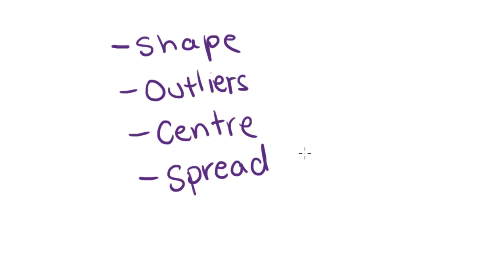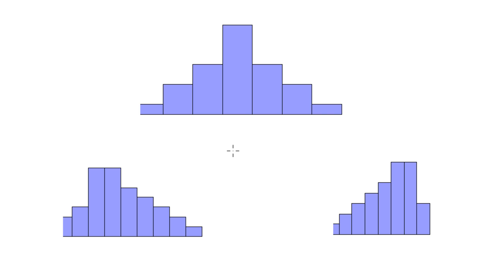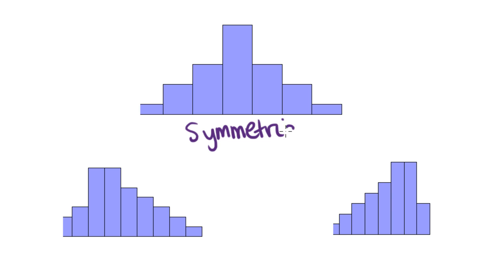So let's start by looking at shape. The shape of a distribution will generally be one of three kinds. Now this one here, if you notice, it basically looks exactly the same on the left as it does on the right — it's symmetrical. That's what we call a distribution when it's balanced, when the centre of the data is actually in the centre of the graph, and roughly on either side of that centre point it's balanced.